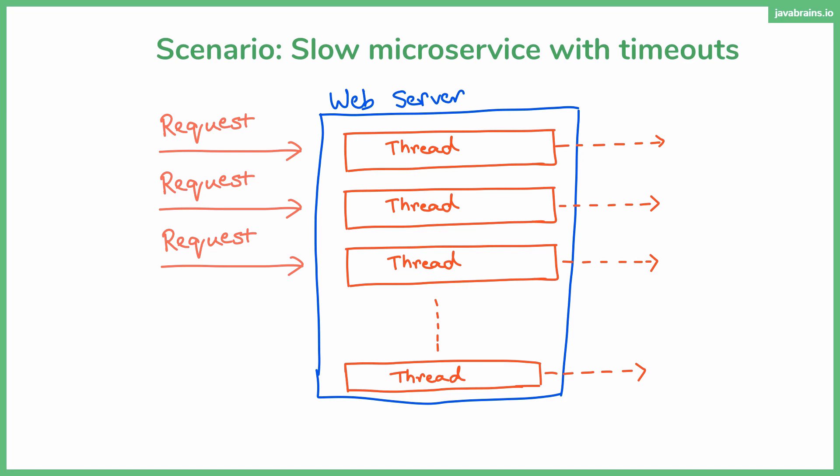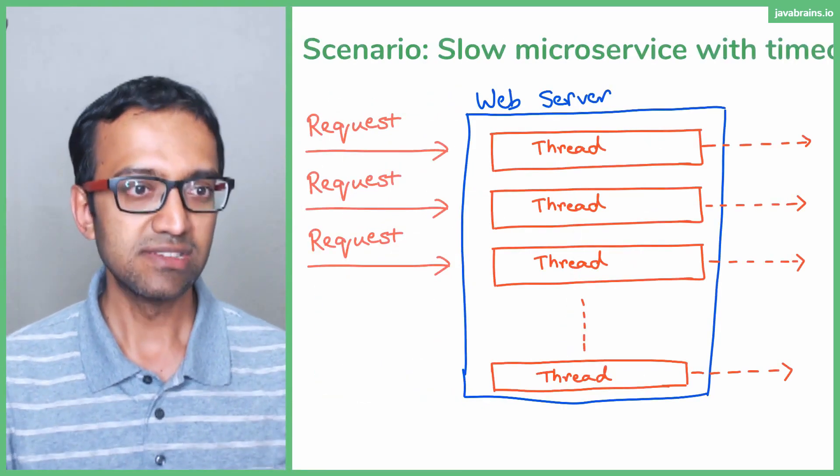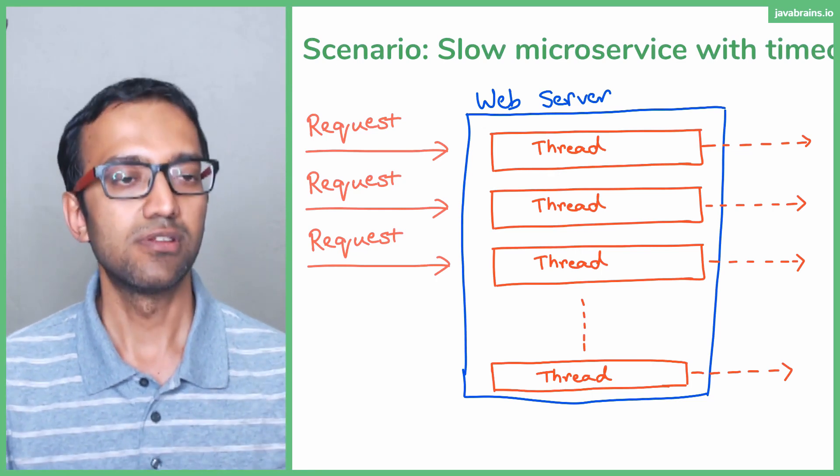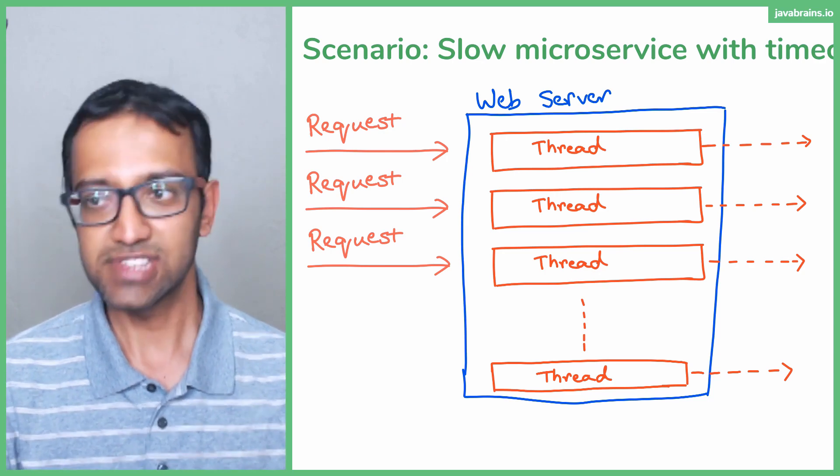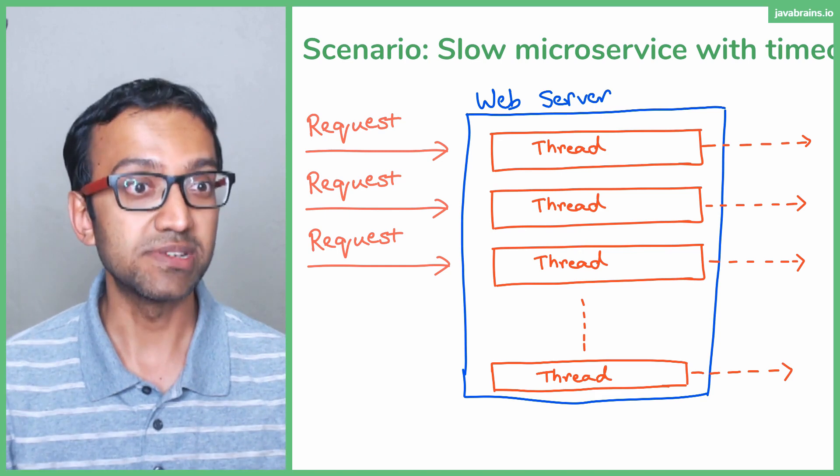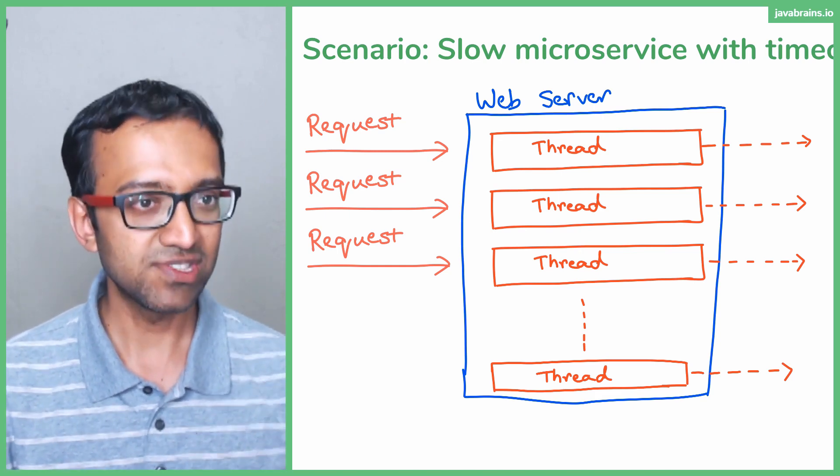Now, what if the requests that are coming in is faster than what the timeout can do to remove something out of the thread? So let's say you've set the timeout of three seconds and I send a request per second, right? Users are sending a request per second and the timeout is taking three seconds.